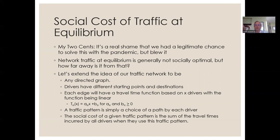Let's extend our idea of a traffic network. It can now be any graph, and drivers can have different starting points and destinations — some starting in Paradise Park, some in Mountain View, others in Honokaa. Each edge will have a travel time function based on x drivers, with that function being linear: a times x plus b, for a and b greater than zero. A traffic pattern is simply a choice of path by each driver, and the social cost is the sum of all travel times incurred by all drivers.